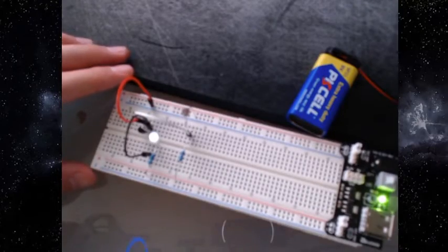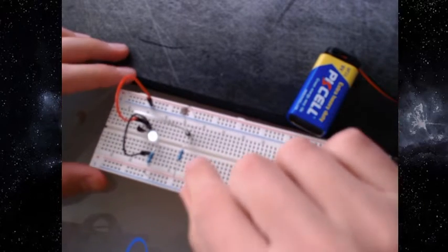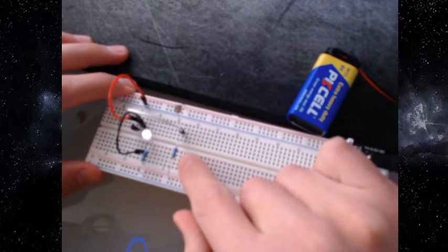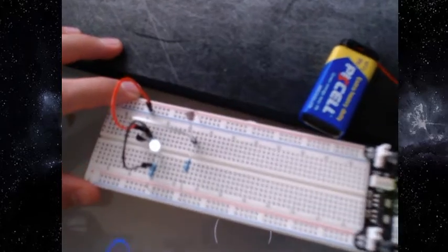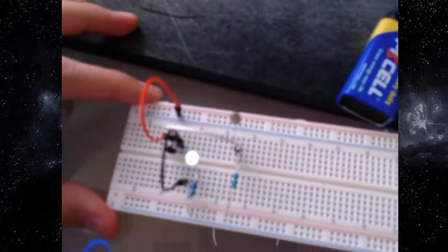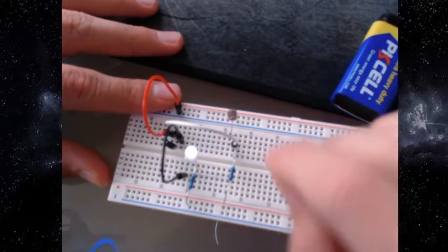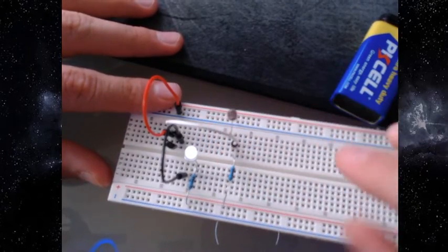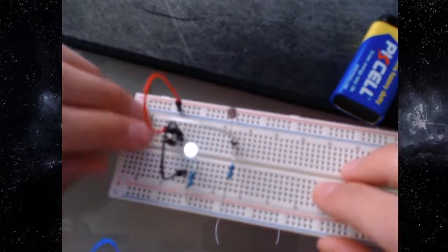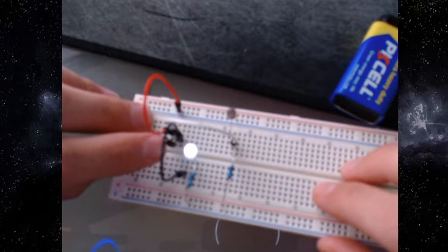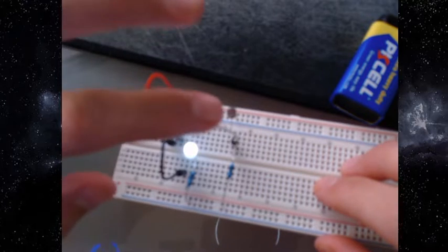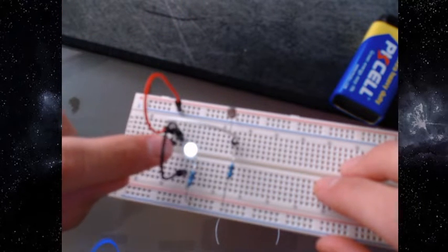And the last one will be a resistor of 1k, that is this one. I don't know if you can appreciate it. Then it will be a white cable. The white cable will be going to the middle of this one, so this has three pins and this one goes to the middle of this one.